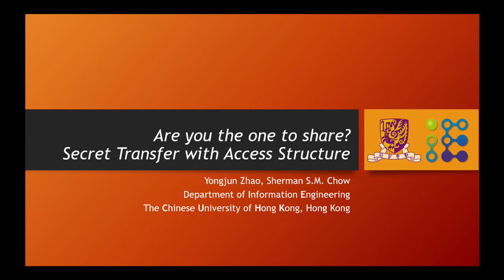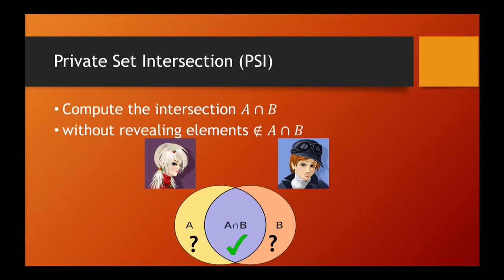Good morning, everyone. I am presenting on behalf of Zhou Yongchun and Sherman Zhao from the Chinese University of Hong Kong. They are unable to attend due to the long visa processing time. If you attended the previous session, you should have heard about Private Set Intersection, or PSI. PSI allows two mutually distrusted parties to compute the intersection of their private sets without revealing anything not in the intersection.